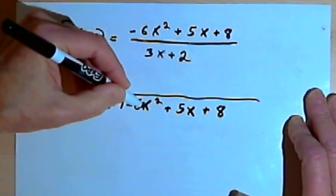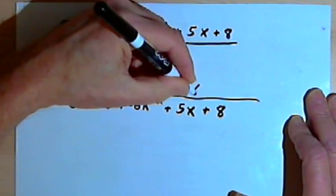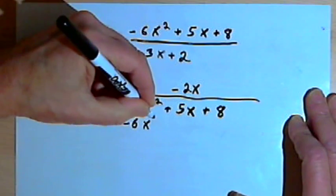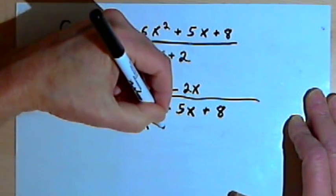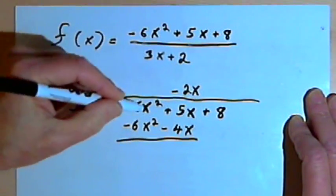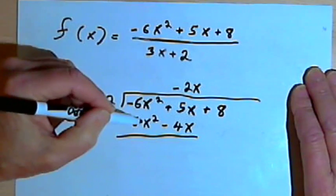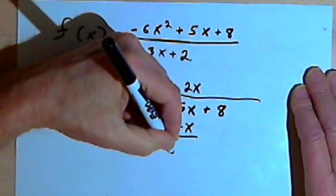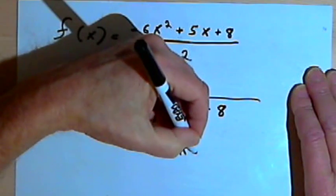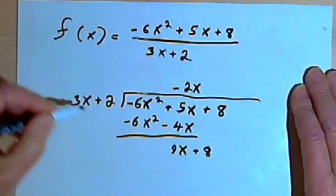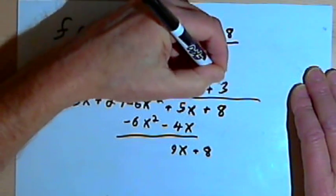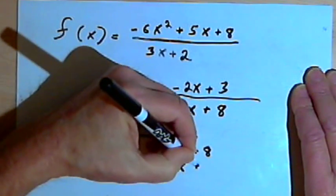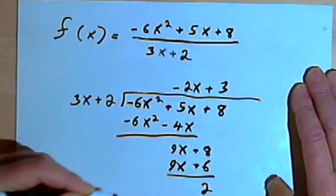I divide 3x into negative 6x squared, which gives negative 2x. Multiply negative 2x times 3x to get negative 6x squared, and negative 2x times 2 to get negative 4x. I subtract — the x squared terms cancel, and I get 5x minus negative 4x, which is positive 9x. Bring down the 8. Divide 3x into 9x to get 3. Then 3 times 3x is 9x and 3 times 2 is 6. I subtract and get a remainder of 2.